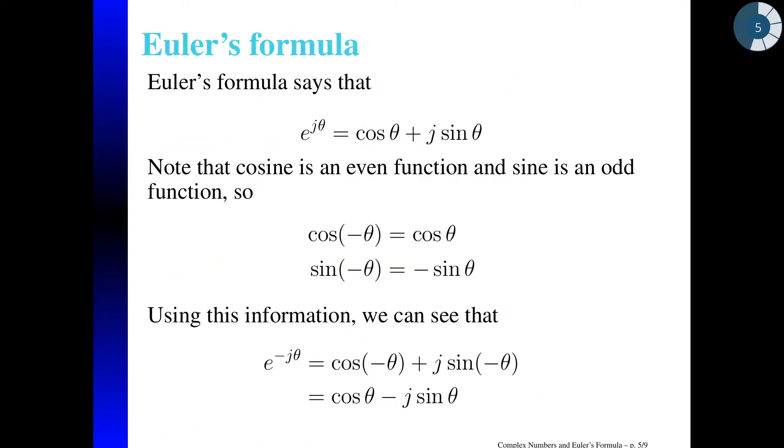So now let's look at Euler's formula. So here we have that our complex exponential, E to the J theta is equal to cosine of theta plus J sine of theta.